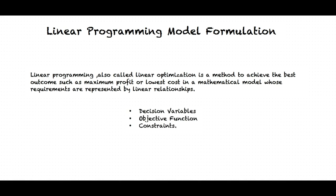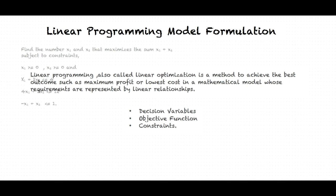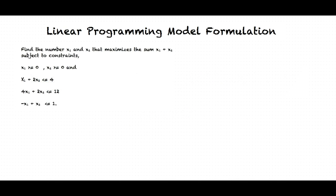To formulate the model, we have to find out decision variables, objective function, and the constraints. Let's see an example to understand those terms. Find the numbers x1 and x2 that maximize the sum, subject to the constraints: x1 ≥ 0, x2 ≥ 0, x1 + 2x2 ≤ 4, 4x1 + 2x2 ≤ 12, and −x1 + x2 ≤ 1.